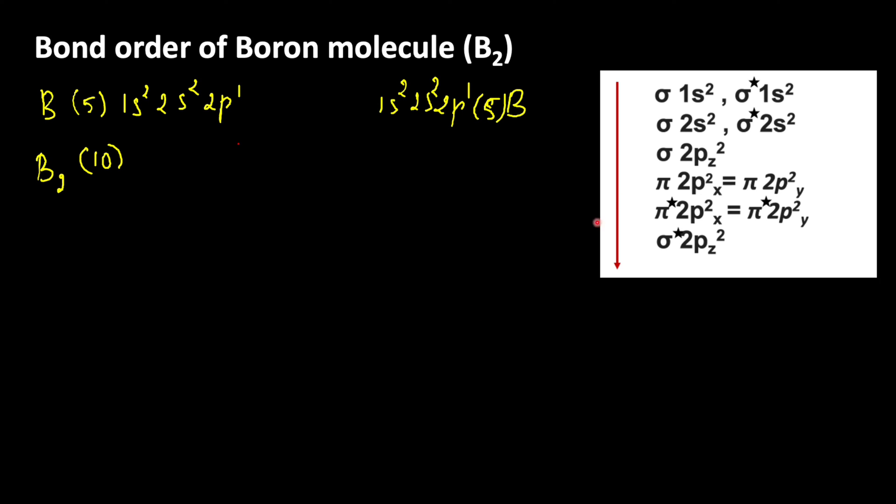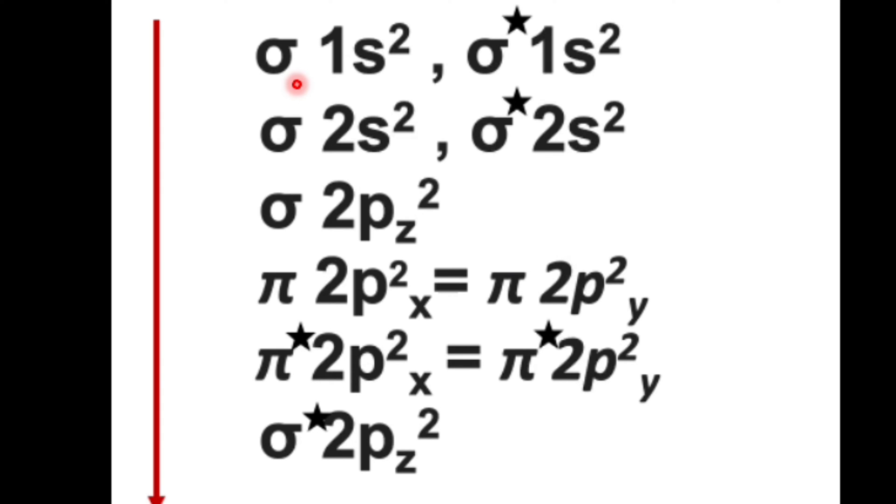Here you can see a table which shows the increasing order of molecular orbitals. After filling sigma 1s bonding molecular orbitals, then only electron can enter into sigma star 1s anti-bonding molecular orbitals, then sigma 2s and sigma star 2s.